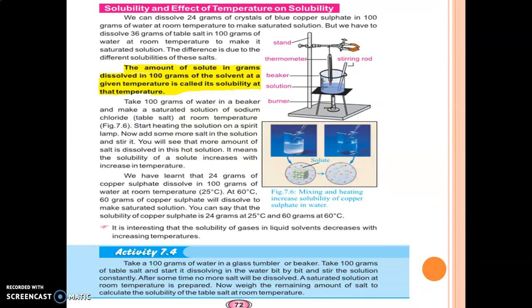Open your books to page number 72 — Solubility and Effect of Temperature on Solubility. We can dissolve 24 grams of crystals of copper sulfate in 100 grams of water at room temperature to make a saturated solution. We have to dissolve 36 grams of common salt in 100 grams of water at room temperature to make a saturated solution.